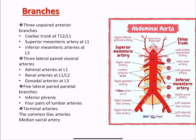We also have three lateral paired visceral branches: the suprarenal (adrenal) at the level of L1, the renal arteries at the level of L1–L2, and the gonadal at the level of L3. Additionally, there are five lateral parietal branches — the inferior phrenic artery and four lumbar arteries — and terminal arteries which are the common iliac artery and the medial sacral arteries.